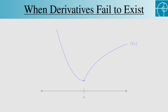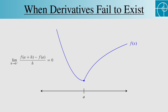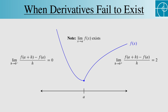Consider this graph of a function f. Let's look at the behavior of the derivative at a. We can see that the secant lines for negative values of h approach a horizontal line, so this one-sided limit is 0. But if we consider the other one-sided limit, where h is positive, the secant lines approach a line with positive slope — it's about 2. So the left- and right-handed limits aren't equal, so the derivative doesn't exist at a. Note that the limit of the function itself exists at a; we're only saying that the limit that defines the derivative doesn't exist.